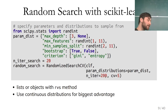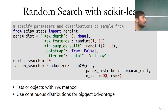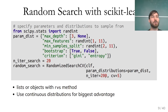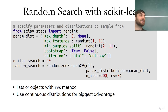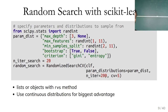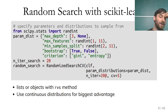Random search is still somewhat naïve because it doesn't take into account the function values that were already observed. Usually when optimizing a function, if you find a parameter that worked well you want to try similar parameters — not just sample independently everywhere.